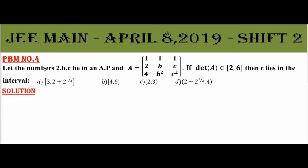Problem number 4: Let the numbers 2, B, C be in AP and A equal to the matrix with rows [1, 1, 1], [2, B, C], [4, B², C²]. If the determinant of A belongs to the closed interval [2, 6], then find the interval in which C lies.